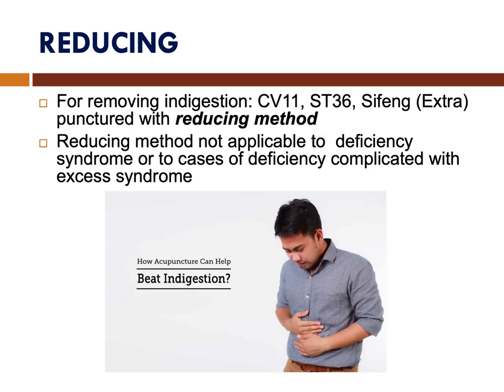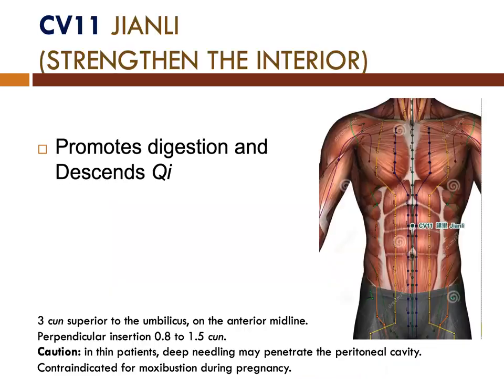Reducing is also used for removing indigestion. The points to use are CV11, Stomach 36, and Sifong. Note that the reducing method is not applicable to deficiency syndrome or to cases of deficiency complicated with excess syndrome. CV11 is used to promote digestion and to descend qi. It is 3 cun superior to the umbilicus on the anterior midline. It is needled perpendicularly, 0.8 to 1.5 cun. Caution should be observed in thin patients as deep needling will penetrate the peritoneal cavity. It is also contraindicated for moxibustion during pregnancy.